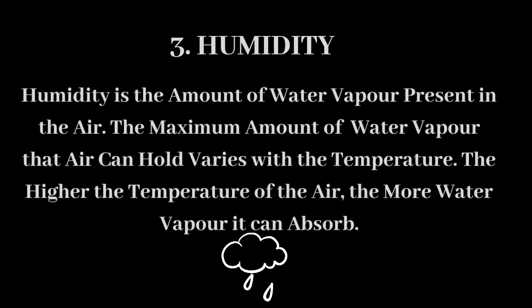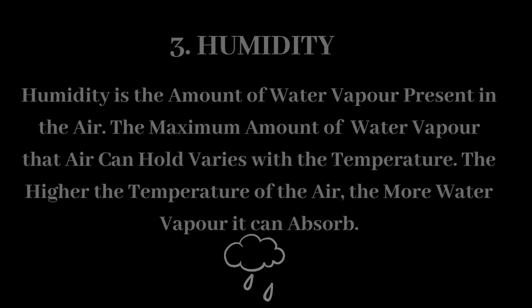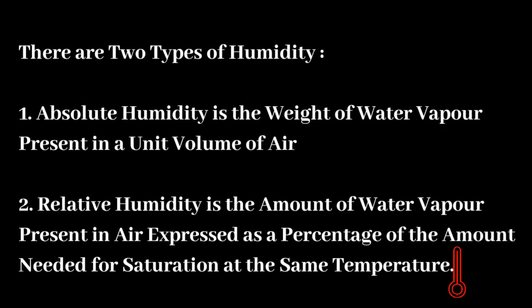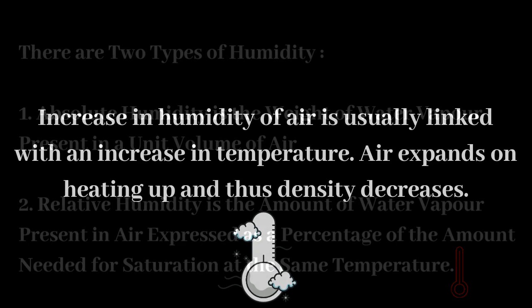Coming to humidity — humidity is the amount of water vapor present in the air. The maximum amount of water vapor that air can hold varies with the temperature; the higher the temperature of the air, the more water vapor it can absorb. There are two types of humidity: absolute humidity is the weight of water vapor present in a unit volume of air; relative humidity is the amount of water vapor present in air expressed as a percentage of the amount needed for saturation at the same temperature.